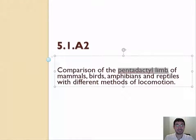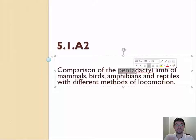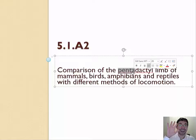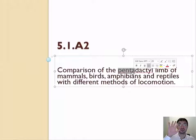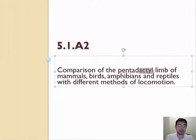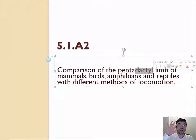Before going further, I want to go into the most famous example of homologous structure: the pentadactyl limb. What does 'penta' mean? It means five. What does 'dactyl' mean? How do you say finger in Italian or French? Digito or doigt — that's where dactyl comes from. So pentadactyl means the five-fingered limb.